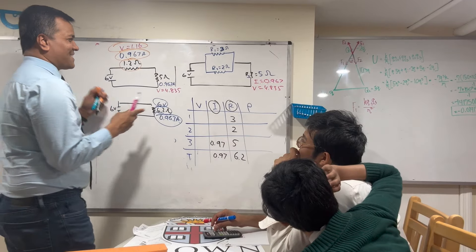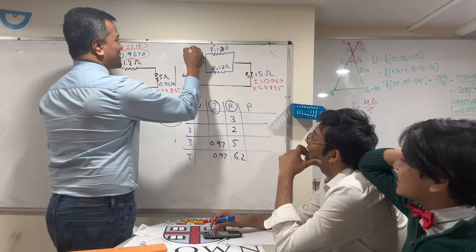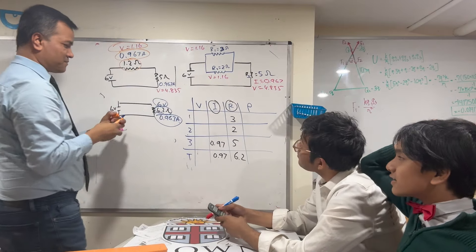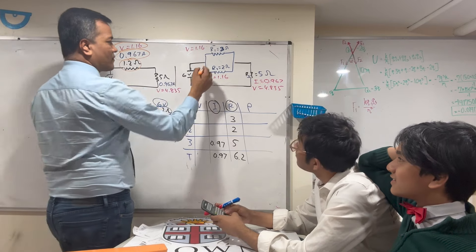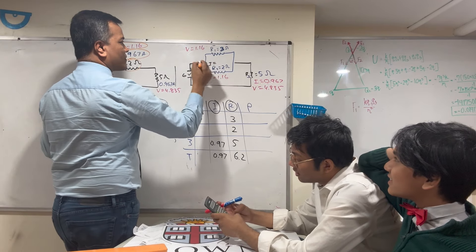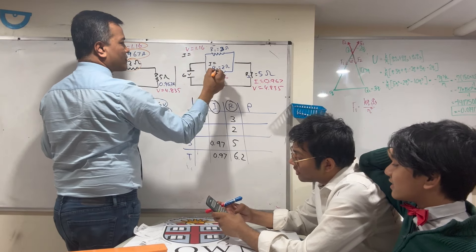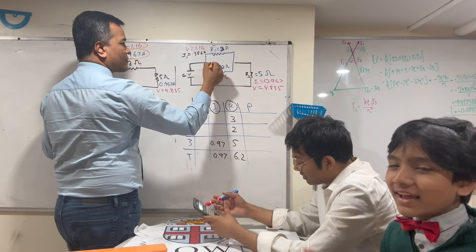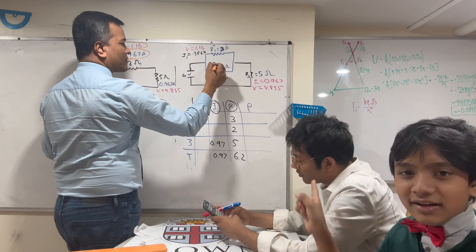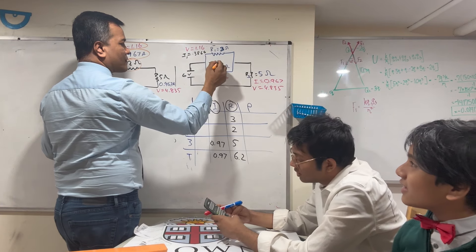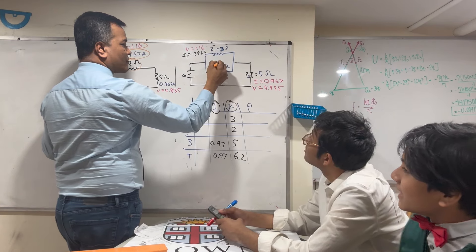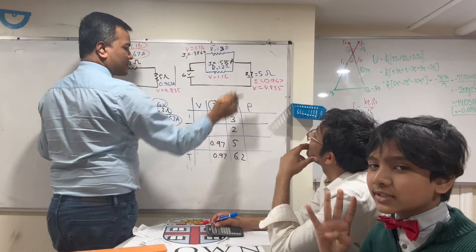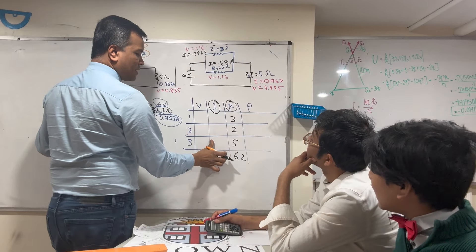Now what is the current? V over R. So 1.16 over 3, so I1 is 0.3866. Give this man an award. 1.16 over 2, which is 0.58. Give this Ivy League university student who's been studying physics for four years an award for learning how to use a calculator.